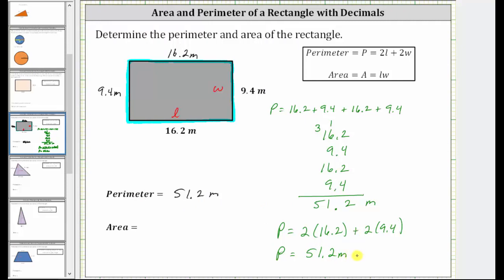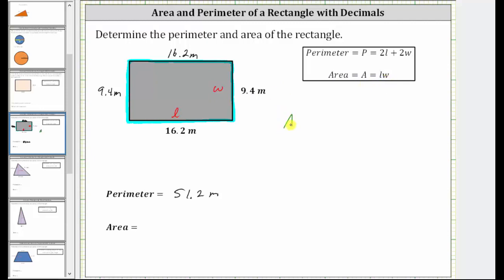And now let's determine the area. The area is equal to the number of square meters that will fit inside the rectangle. Because we have a rectangle, the area is equal to L times W or length times width, which means the area is equal to 16.2 meters times 9.4 meters, which will give us the units of meters squared. Let's go ahead and find this product by hand. We have 16.2 times 9.4. Notice both factors contain one decimal place and therefore the product will contain two decimal places.